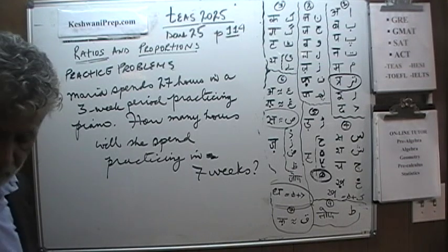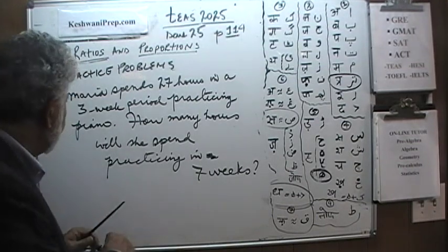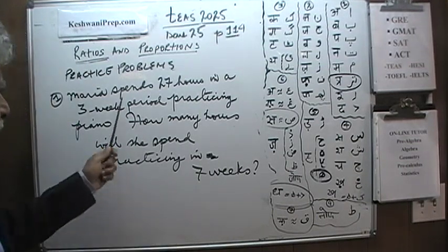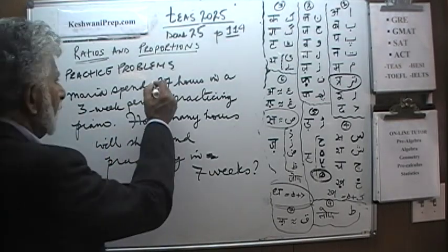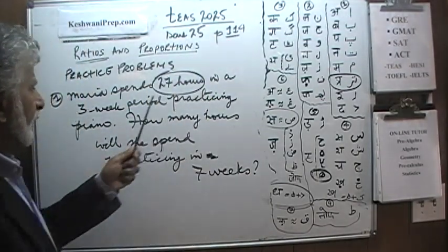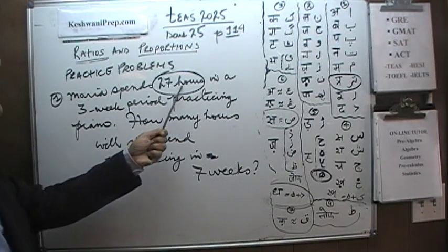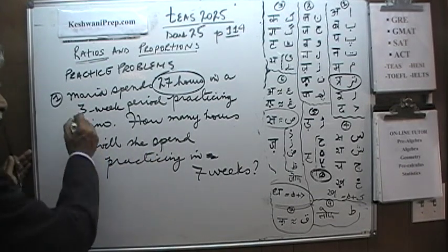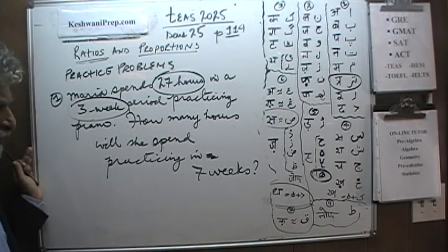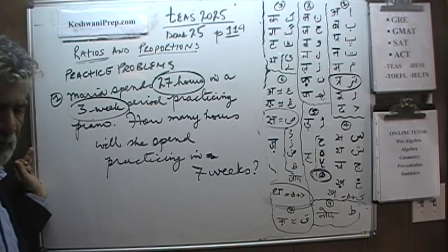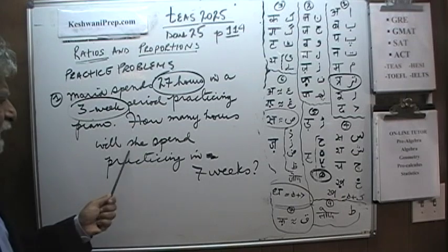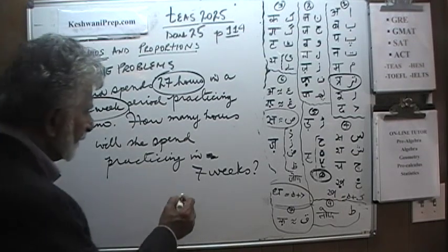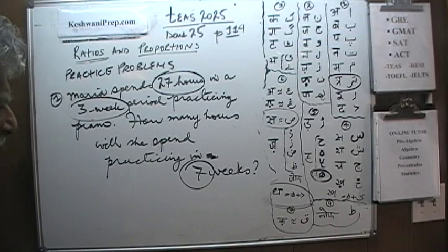Here's the first problem. We are told that Maria spends 27 hours in a three-week period practicing her piano. The question simply is, if she continues this practice, how many hours will she spend practicing her piano in a period of seven weeks?